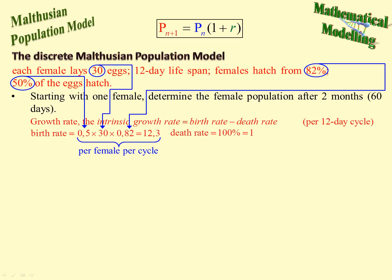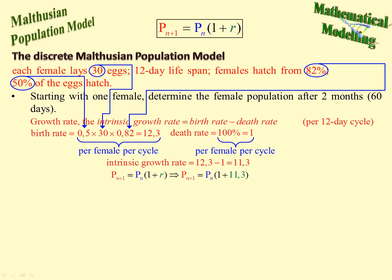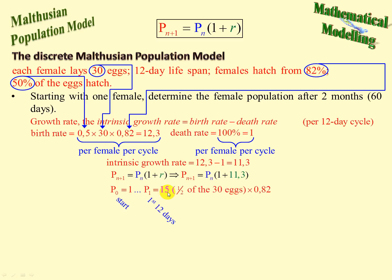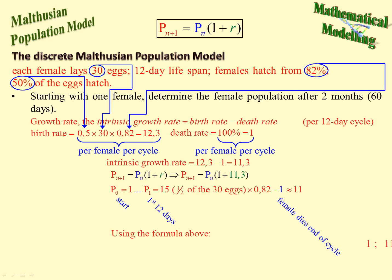The death rate is 1 female per cycle. The intrinsic growth rate is 12.3 minus 1, which equals 11.3. There's our formula. So let's calculate: at P0 we have 1. For P1, we have 30 eggs times 0.82 times 0.5, and the female dies, so we end up with approximately 11. Thereafter we use the formula, and there is the number of spiders for that female per cycle.